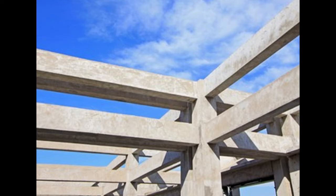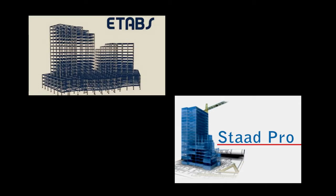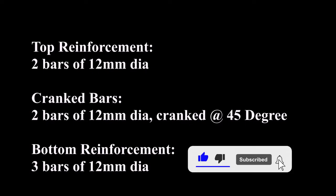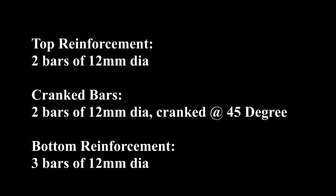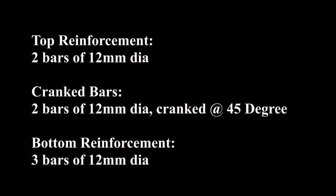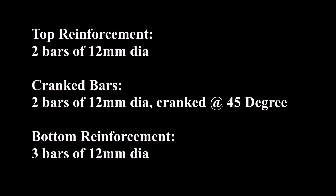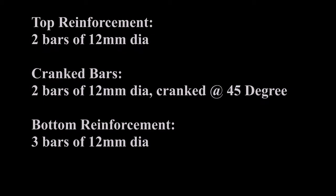There are other considerations like secondary and tertiary spans, point loads, and wall loads which have to be considered. It is always recommended to use structural design software like ETABS or STATPRO. For a beam up to 5 meters length, with secondary spans up to 4 meters and wall loads up to 8 kN per running meter, the following steel can be used: for top reinforcement, two bars of 12 mm; for crack bars, two bars of 12 mm cranked at 45 degrees at a distance of L/4 at both ends; and for bottom reinforcement, three bars of 12 mm diameter.